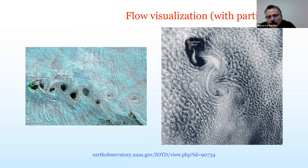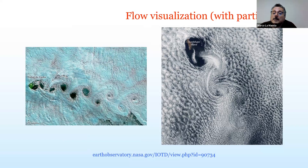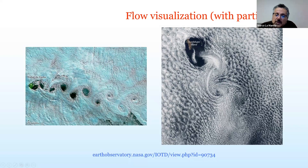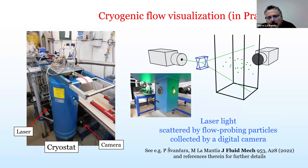Today I will talk about flow visualization. The main idea is that you have some particles in the fluid, and these particles allow you to visualize what is going on. There are a couple of examples — pictures taken from satellites — where you can see an island with wind flowing over it, creating a vortex street. The clouds in this system can be regarded as the particles.